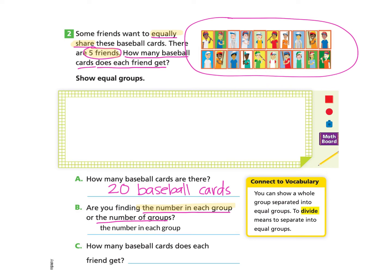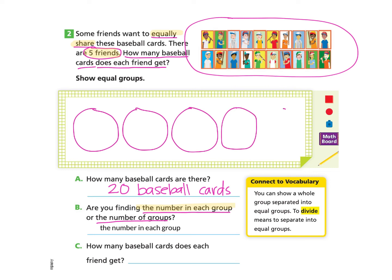Now it's time to show the equal groups in the green rectangle. If you would like to pause and try this on your own, you can and come back. Otherwise, you can follow along with me. The first thing I'm going to do is create 5 circles, and I'm creating these 5 circles to represent the 5 friends. I'm going to put 1 baseball card at a time in each of the friends' circle so that I know they're all equally going to share these baseball cards. Now I will go through and put 1 card in each circle until I get to 20, because that's how many baseball cards we have.